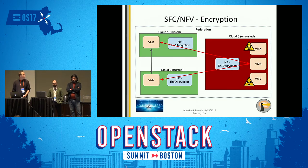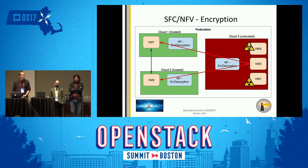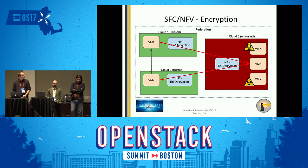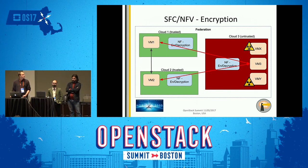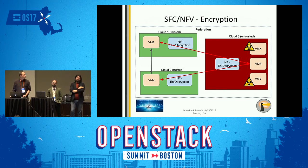Another use case is encryption. You have a federation where one of the clouds you don't trust at all — two of the VMs in that cloud are actually compromised. But you still want to be able to talk to VM number three. Between cloud one and two, which trust each other, traffic can be unencrypted. But as soon as you want to talk to VM number three in the untrusted cloud, all traffic will be encrypted or decrypted.